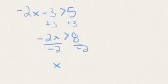And now we want to divide by negative 2 on both sides. And we're left with x over here. 8 divided by negative 2 is negative 4. Now because we divided by a negative, we're going to flip the sign to point in the opposite direction. So x is less than negative 4.